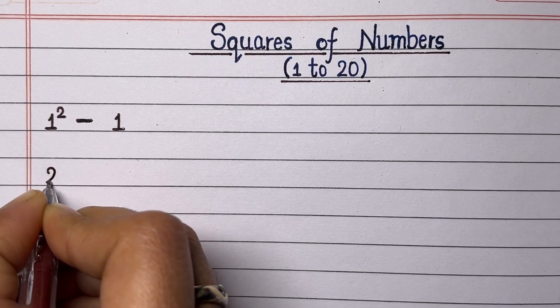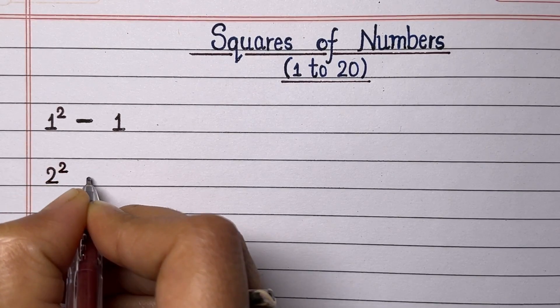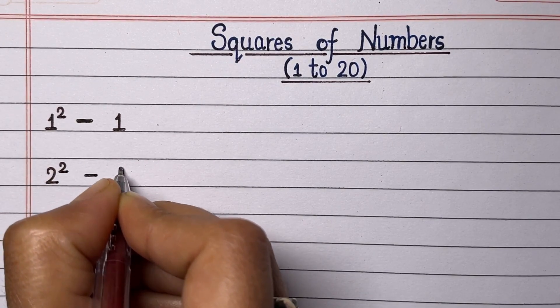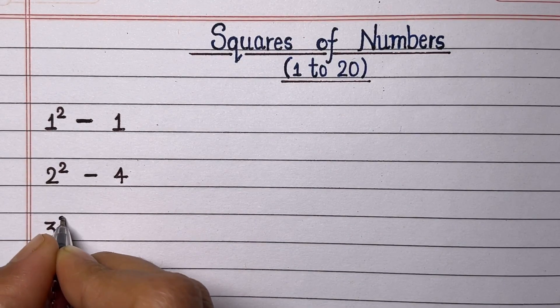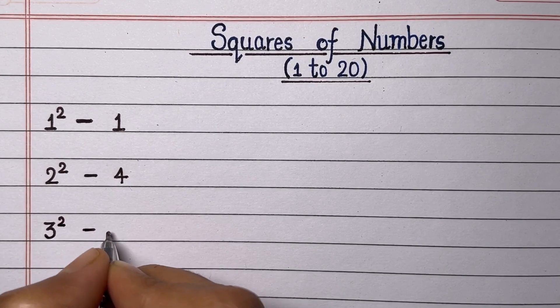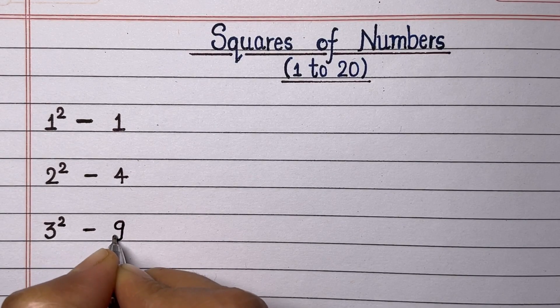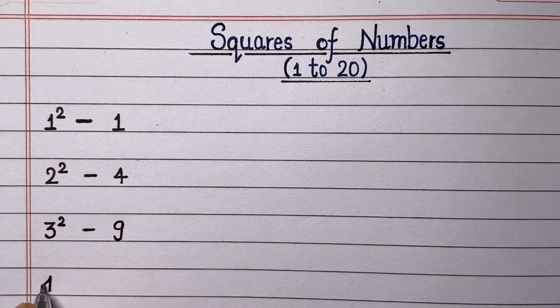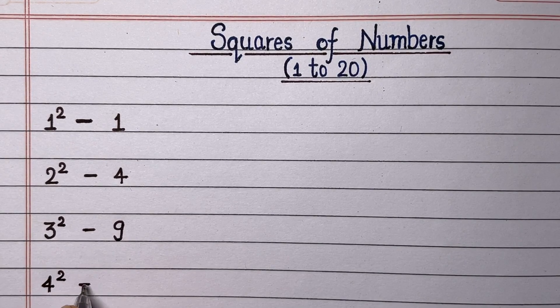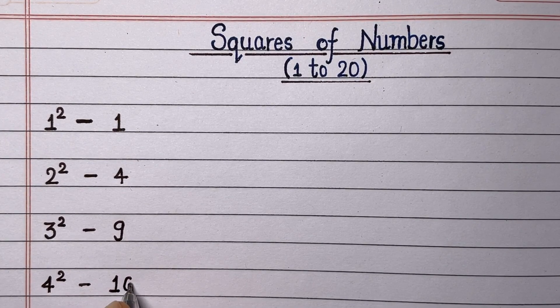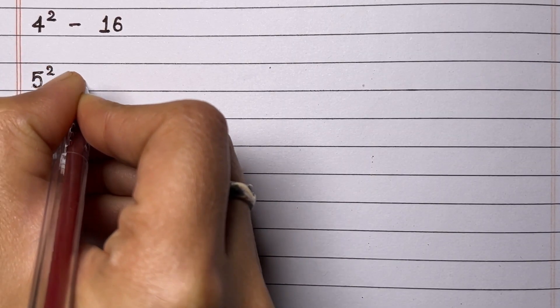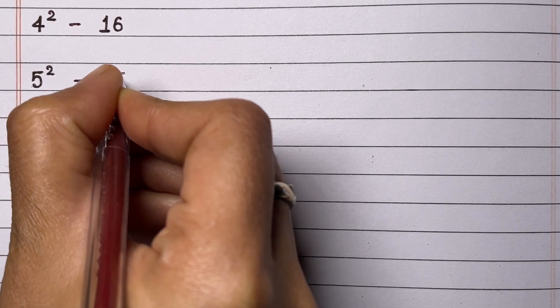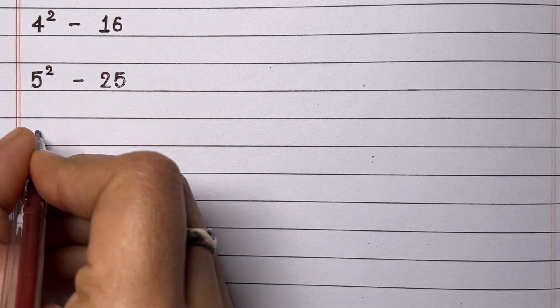The square of 1 is 1. Square of 2 is 4. Square of 3 is 9. Square of 4 is 16. Square of 5 is 25.